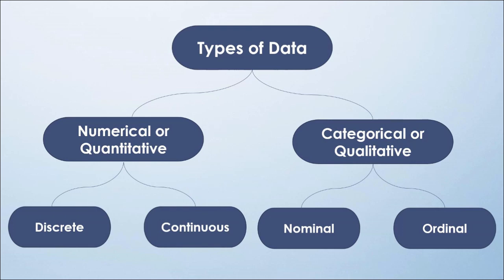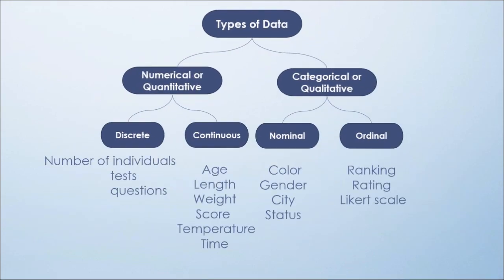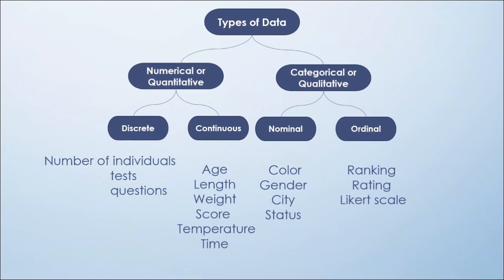On the other hand, nominal data denotes labels or categories, while ordinal data refers to data that can be categorized and also ranked according to some kind of order or hierarchy.